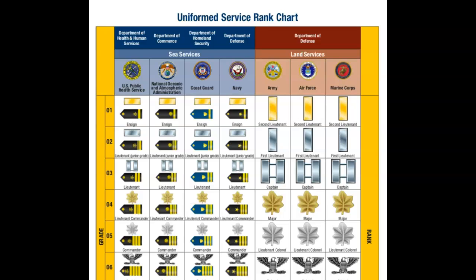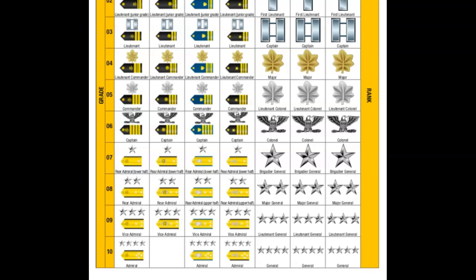We'll look at grades one through ten. The O-1 grade in the sea services is called Ensign; in land services it's called Second Lieutenant. The O-2 grade in sea services is Lieutenant Junior Grade; in land services it's First Lieutenant. At grade three, the sea services rank is Lieutenant and land services is Captain. For grade four, the sea services rank is Lieutenant Commander and land services is Major. At grade five, the sea services rank is Commander and land services is Lieutenant Colonel.